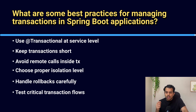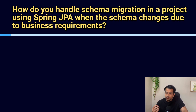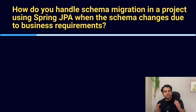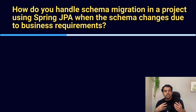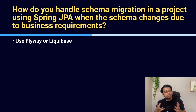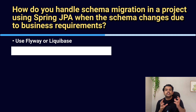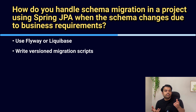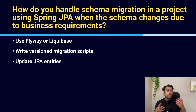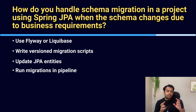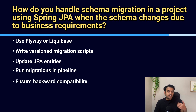Next question: how do you handle schema migration in a project using Spring JPA when the schema changes due to business requirements? Tools like Flyway or Liquibase are used for database migration. Write migration scripts for adding or modifying tables, then update JPA entities to match the new schema. Run migrations as part of the deployment pipeline and make sure they are backward compatible. This keeps the schema consistent across all environments.